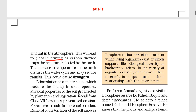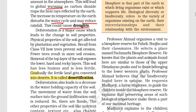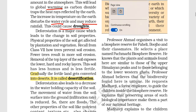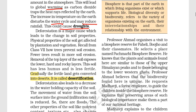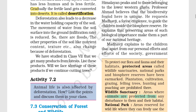If the temperature is increasing, ultimately it affects the water cycle, and therefore rainfall is reduced. Ultimately, this situation is what we call droughts. Gradually, if this situation continues for a longer time, we call it desertification.